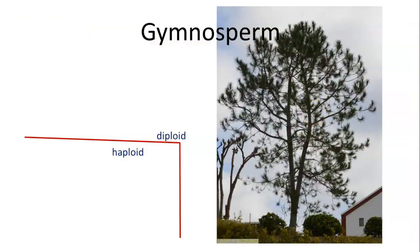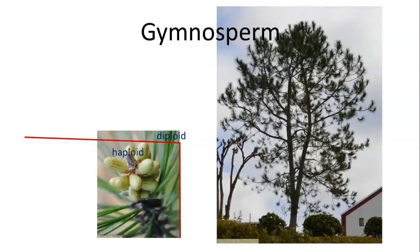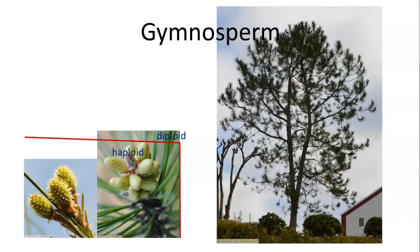We're going to look at the gymnosperms now, and we're going to start out by looking at a pine tree. The pine tree is diploid, and being diploid, it is the result of the seed germinating. At some time during its life cycle, it is going to produce gametes. This is the male gamete cone of a pine tree. This is the female gamete cone of a pine tree. The male gamete passes the pollen onto the female gamete that fertilizes the egg.